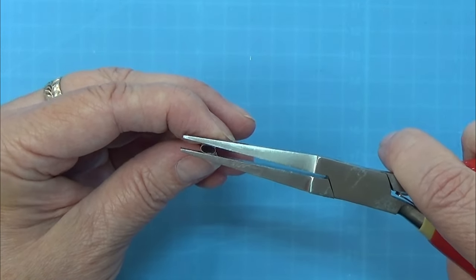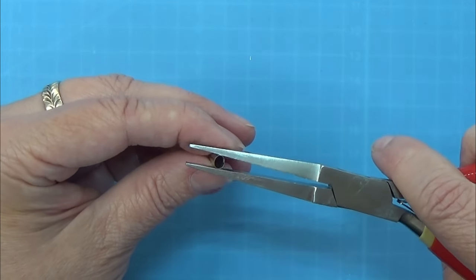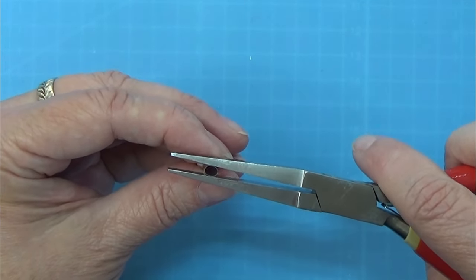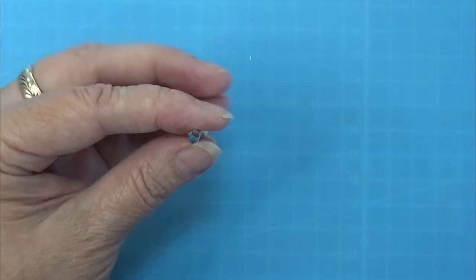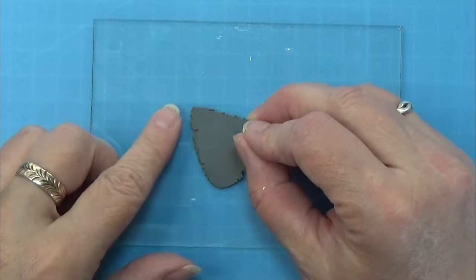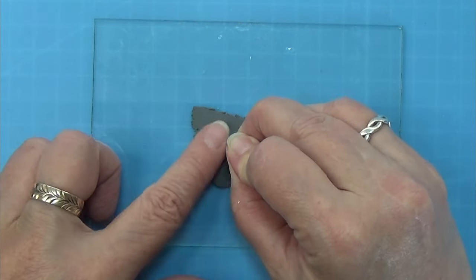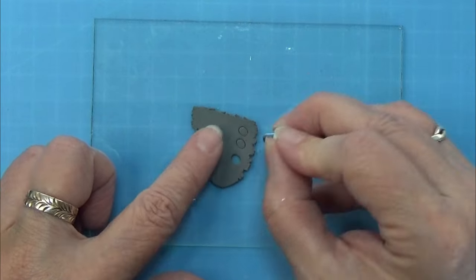For that I need this oblong hole punch for my clay, and I have this circle round one that actually fits the size. I'm just using my pliers to kind of squeeze it a tiny bit together to get the right oblong shape of it.